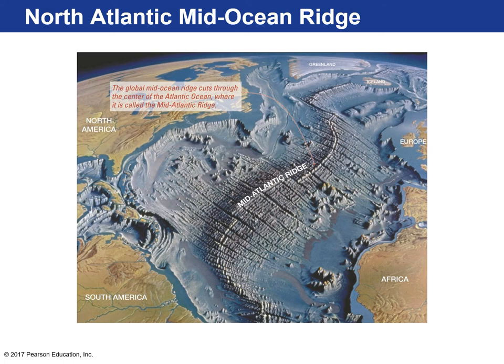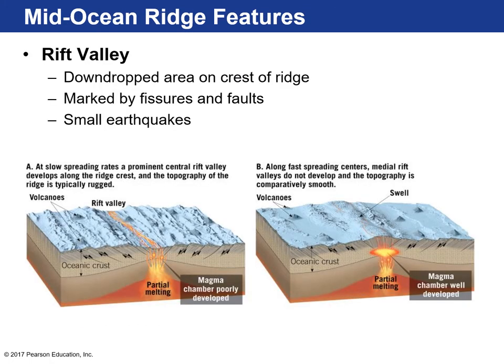Here's a depiction of the Mid-Atlantic Ridge. We're at the Florida coast with a passive margin and varying shelf width. This leads off into the continental shelf, then the abyssal plain, and as we approach the Mid-Atlantic Ridge, it's a mountain chain running through the center of the Atlantic Ocean. Right at the center are valleys where the volcanic eruptions occur as the two plates move away from each other — that's the rift valley, a down-dropped area at the crest of the ridge, marked by fissures, faults, and small earthquakes.